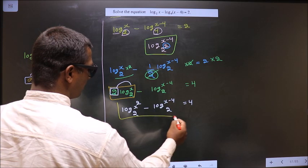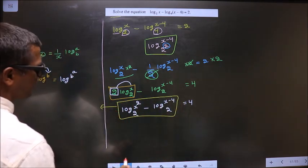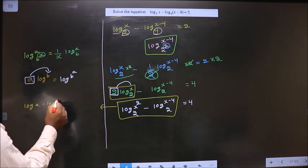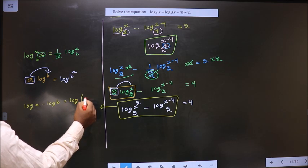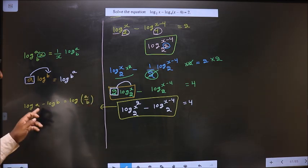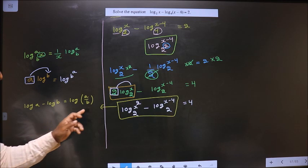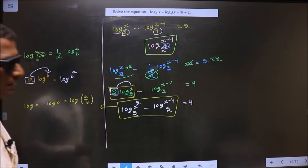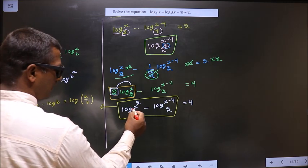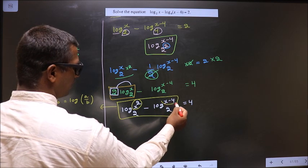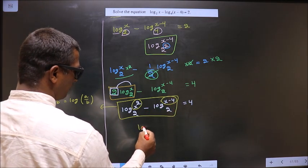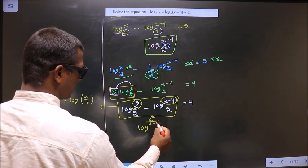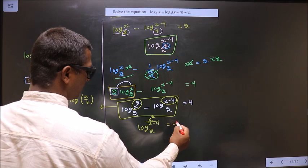Now I apply the formula: log a minus log b equals log(a divided by b). Here we have subtraction, so in the result we get a fraction. In place of a we have x-squared, and in place of b we have (x minus 4), giving log(x-squared over x minus 4) base 2 equal to 4.